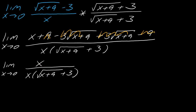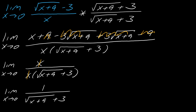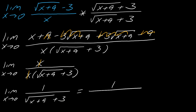Looking at this problem, the x's cancel out, and I'm left with the limit as x approaches 0 of 1 over the square root of x plus 9 plus 3. Now I have a 1 on top, and the expression under the square root is just a polynomial, so there's no reason I can't plug in 0. You no longer get 0 over 0 — we got rid of that part. This ultimately comes out to 1 over 6, so there's the limit.